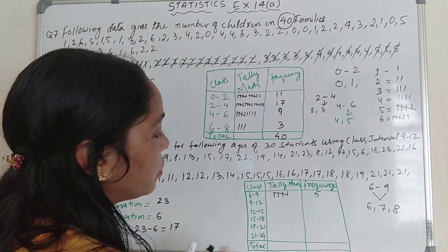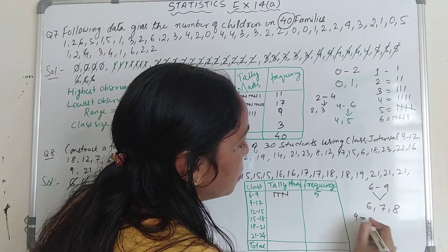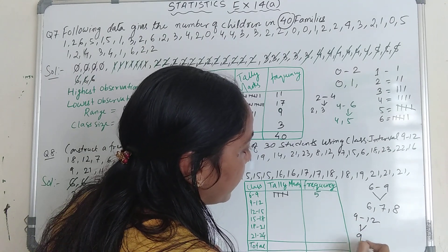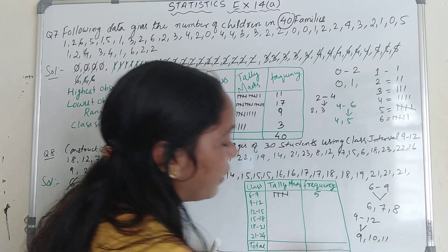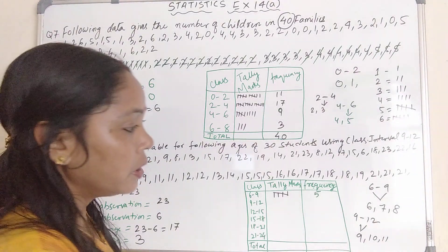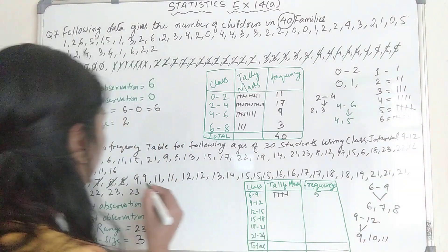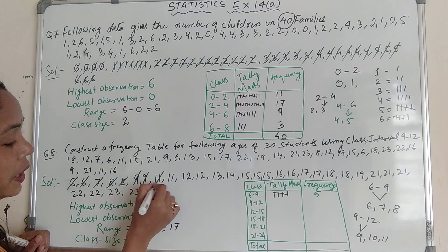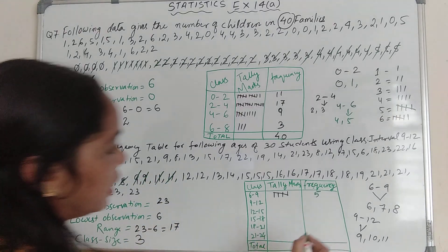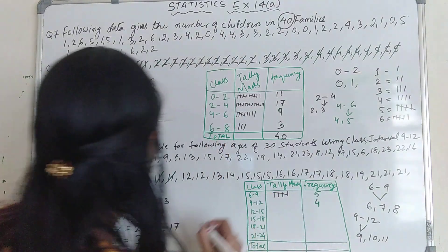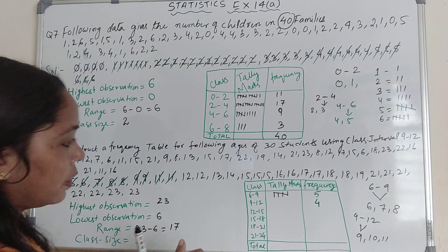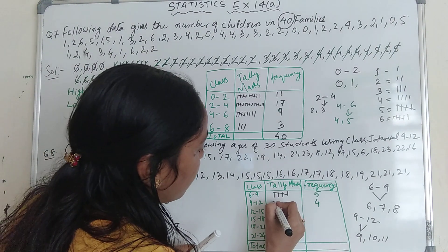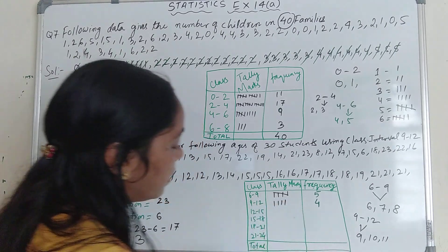Next, interval 9 to 12 — include 9, 10, and 11, excluding 12. Counting gives: 1, 2, 3, 4 — only 4. So write down the tally marks for 4: four lines.